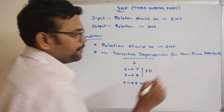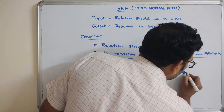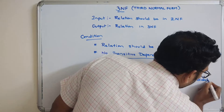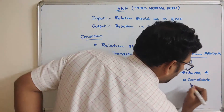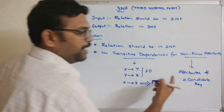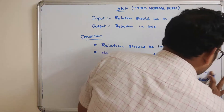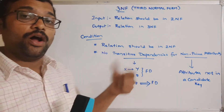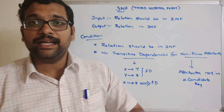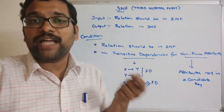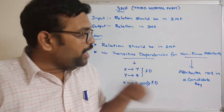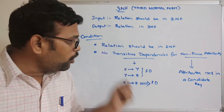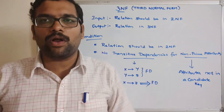What is a non-prime attribute? Attributes of a candidate key are called prime attributes, and attributes not in a candidate key are called non-prime attributes. If the candidate key has any attributes, those are called prime attributes. We have to identify the non-prime attributes — the attributes which are not in a candidate key. There should not be a transitive dependency for these non-prime attributes.